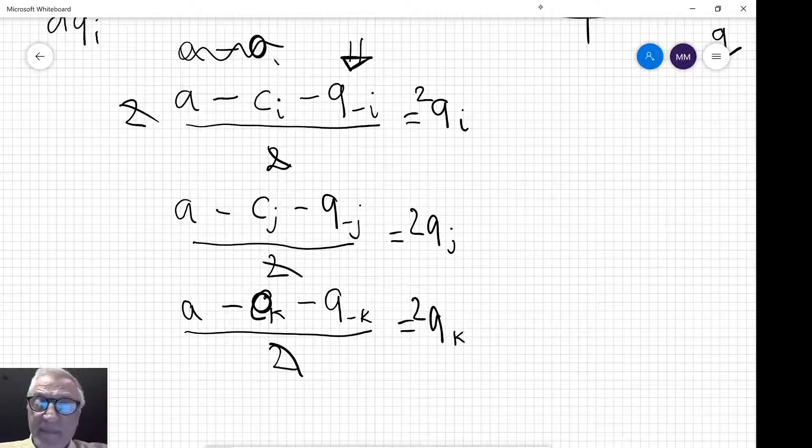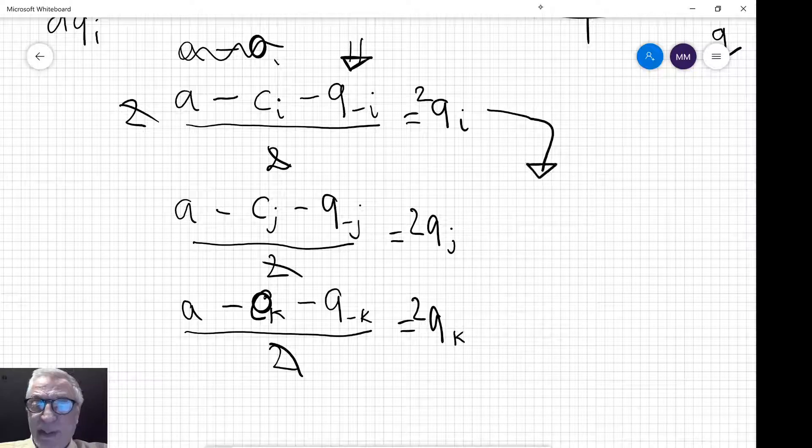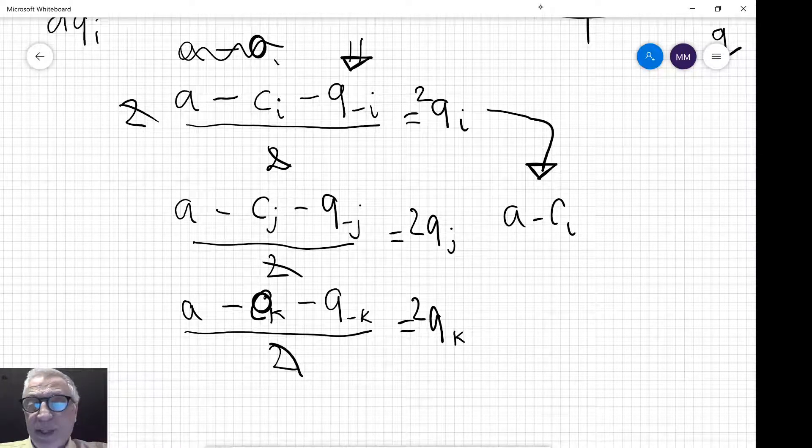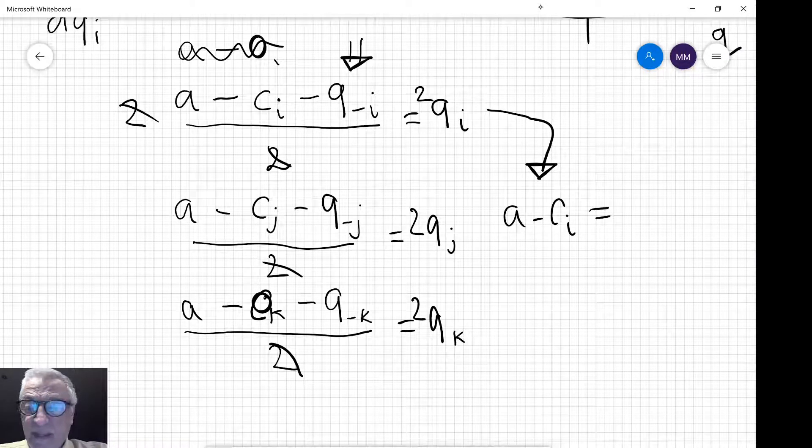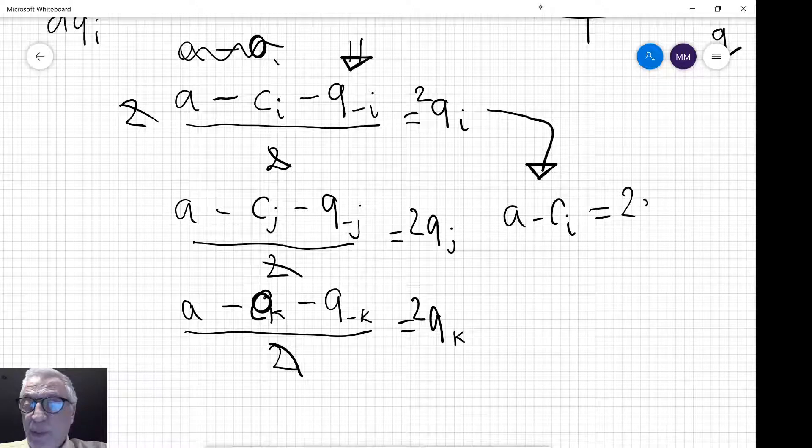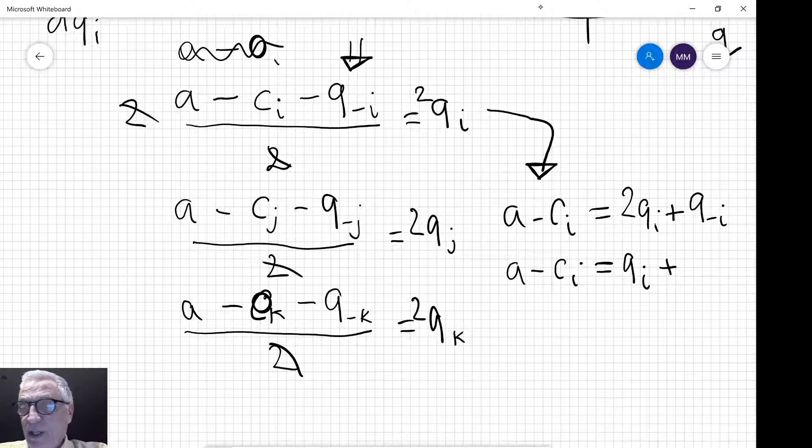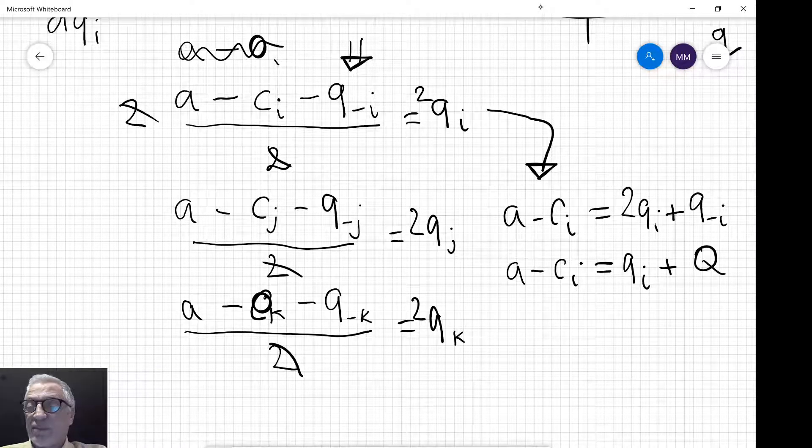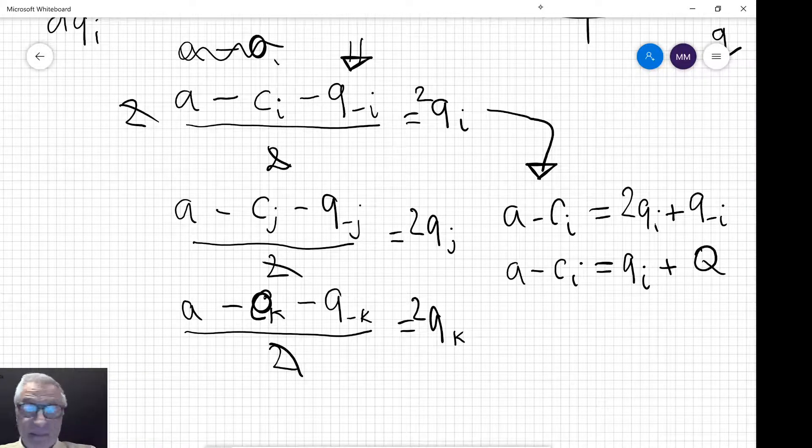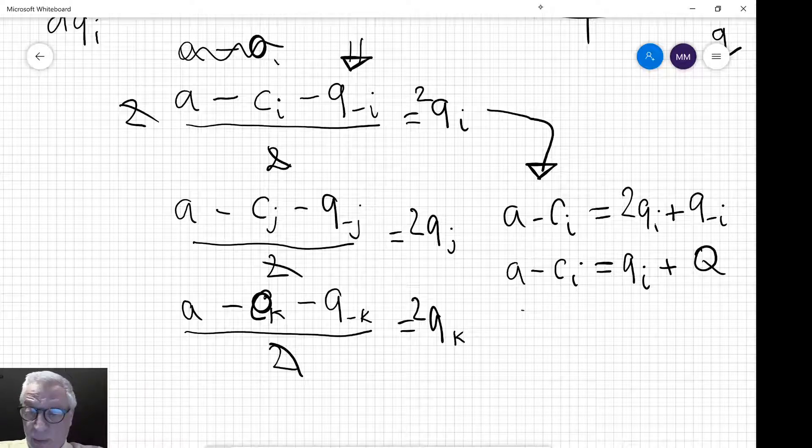So what have I got here? This is a minus C_I equals 2Q_I plus the output produced by everybody other than firm I. Let's write this in a slightly more interesting form: that is the output of firm I plus the output of firm I plus the output of everybody in the industry. Remember this applies to firm I but it also applies to firm J and it also applies to firm K.